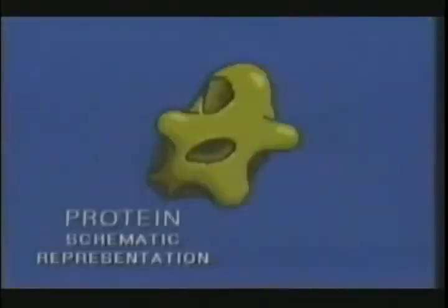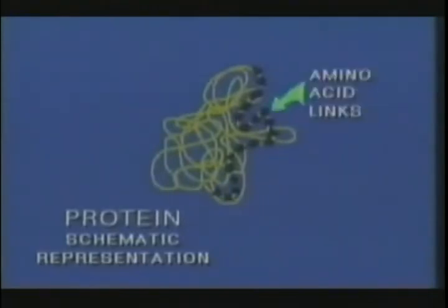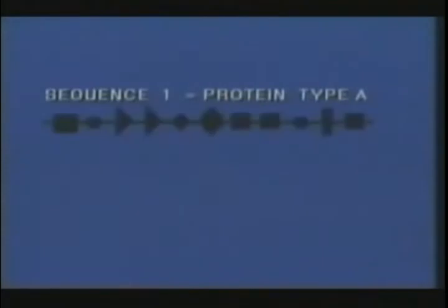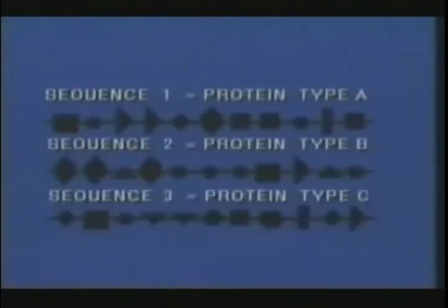A protein is a complex organic compound — a chain called a polypeptide, whose links consist of amino acids. From this amino acid sequence, the protein derives its form and function.